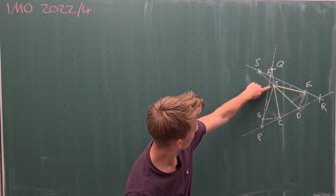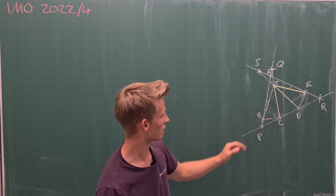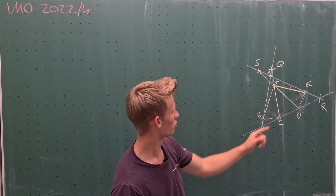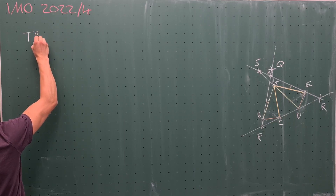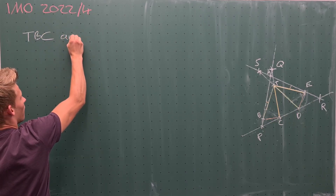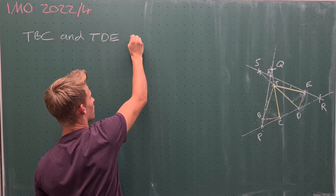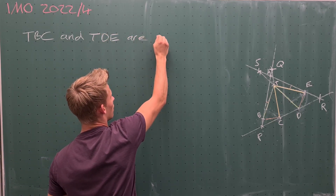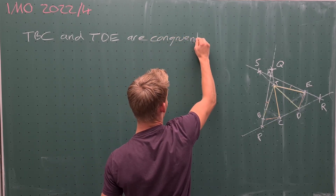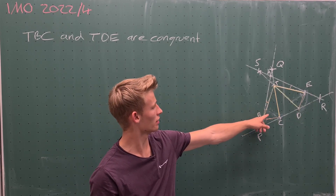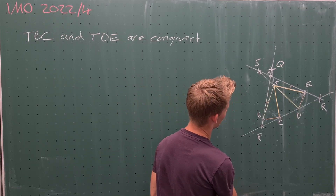The first thing we can notice is that in triangles TBC and TDE, all sides have the same length. Therefore these two triangles are congruent: triangle TBC and triangle TDE are congruent.